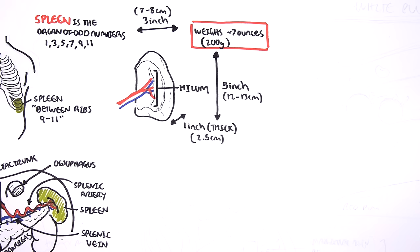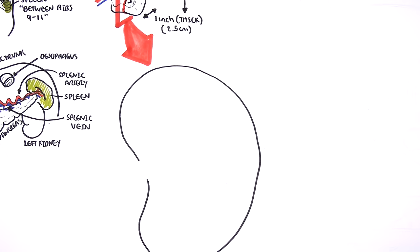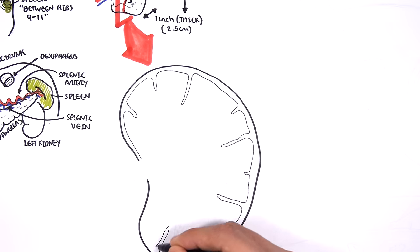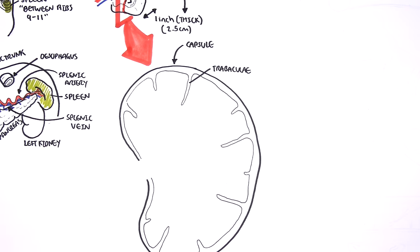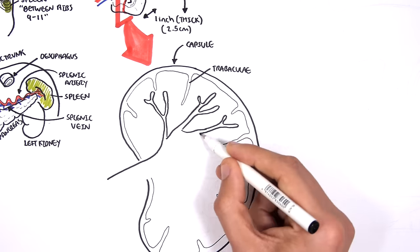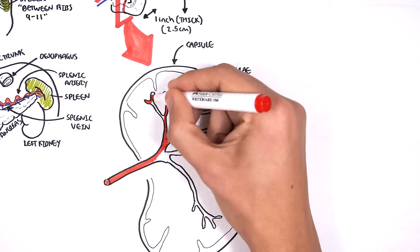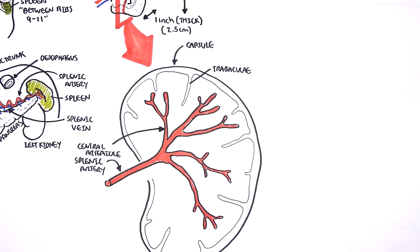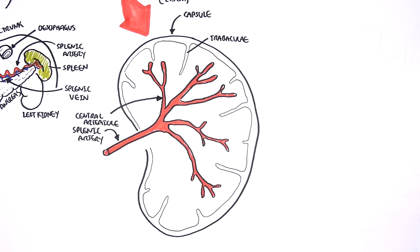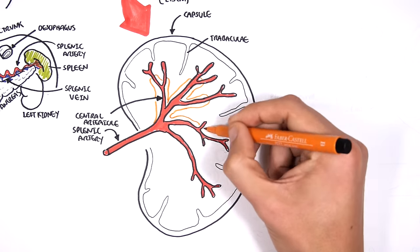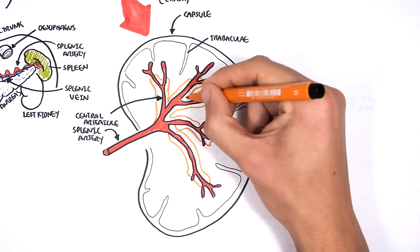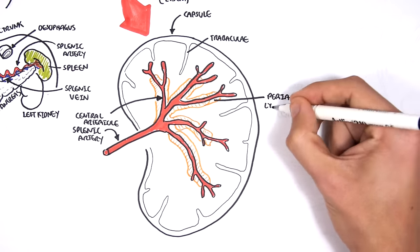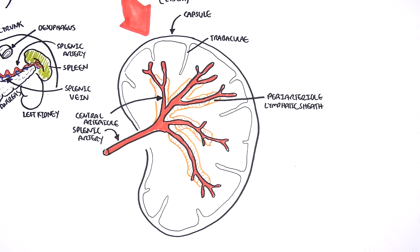Let's now cut a section of the spleen and look at the histology. The spleen is covered by a capsule and has trabeculae coming within the tissues. Here is the splenic artery, which brings blood into the spleen and branches off into smaller arterioles called central arterioles, which then continue on to become end arteries or end capillaries. Surrounding the arteries within the spleen are lymphatic tissues called the peri-arterial lymphatic sheath or peri-capillary lymphatic sheath.